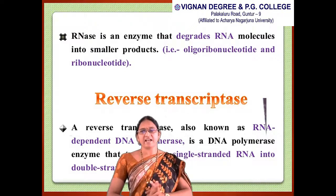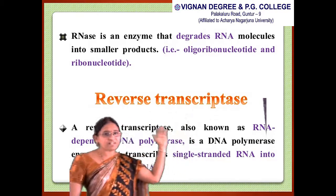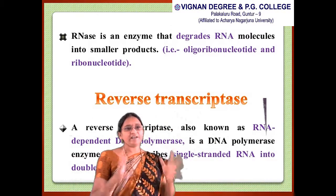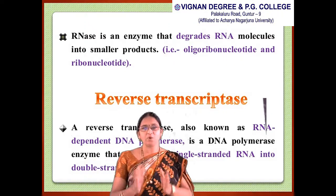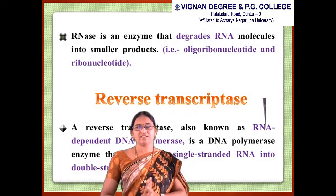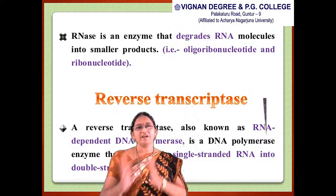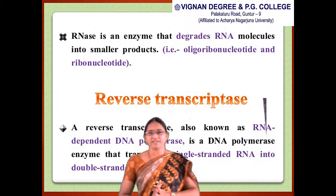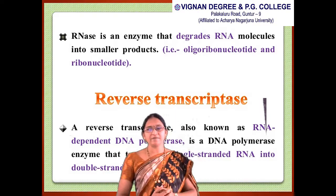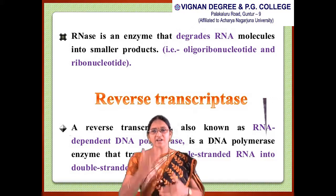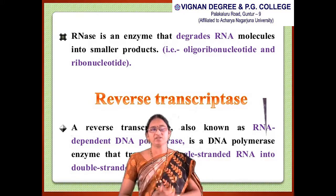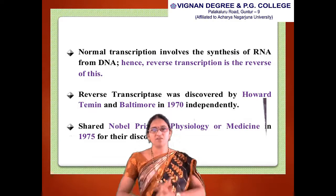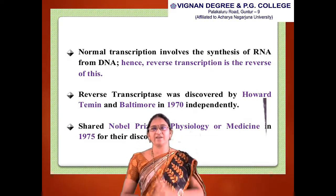Reverse transcriptase enzyme, also known as RNA-dependent DNA polymerase, is a DNA polymerase enzyme that transcribes single-stranded RNA into double-stranded DNA. Normal transcription involves the synthesis of RNA from DNA; hence, reverse transcription is the reverse of this process.